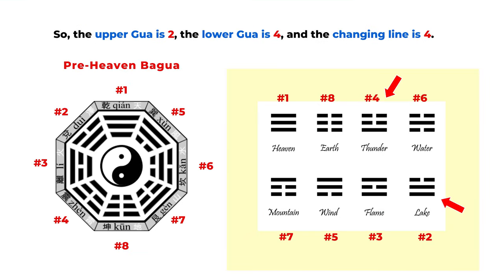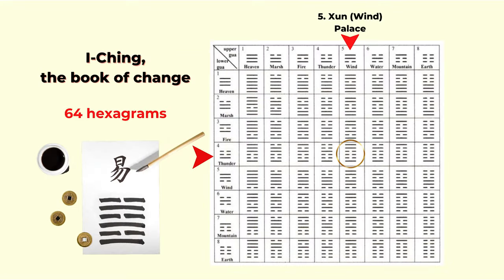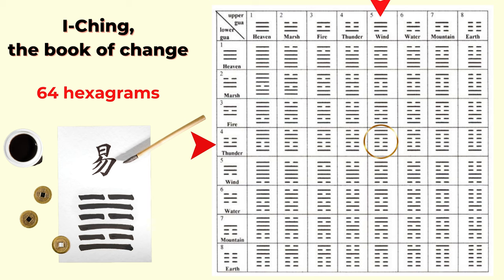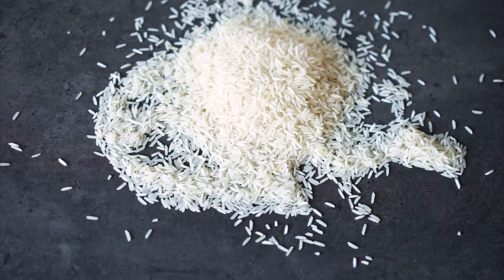After you have your three numbers, go back to the bagua chart to find your combination and your Yi Jing hexagram. There is a chart for all 64 Yi Jing hexagrams based on the upper gua and lower gua — you can refer to charts like this and find the meaning of each hexagram. After the changing line transforms yang to yin or yin to yang, you have a new Yi Jing hexagram representing the future result. Most people think Yi Jing is very complicated, but it can actually become very easy and very flexible. If you practice this method frequently, you will be more and more accurate. Thank you so much for watching, and see you next time.